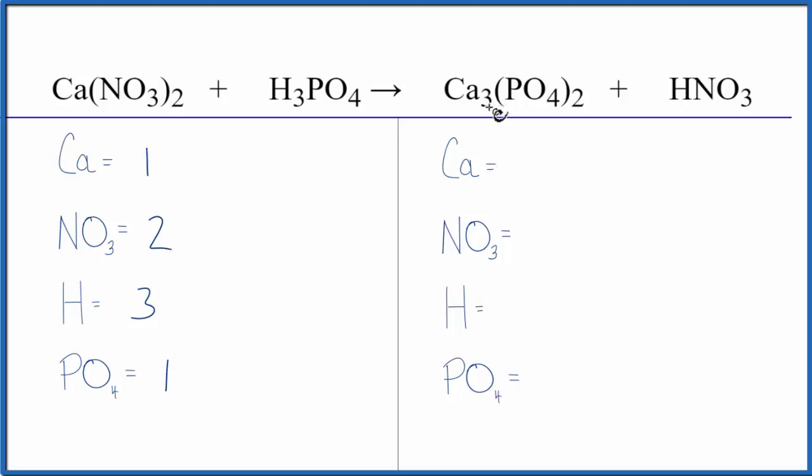On the other side, three calciums, one nitrate ion, one hydrogen, and one phosphate times the two. We have two of those. So things are a lot simpler looking when we do it this way.